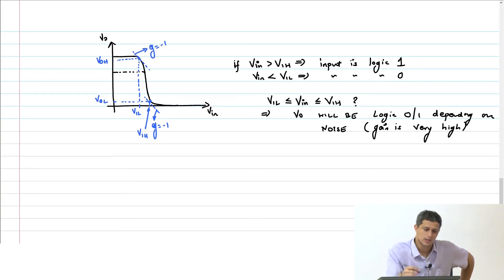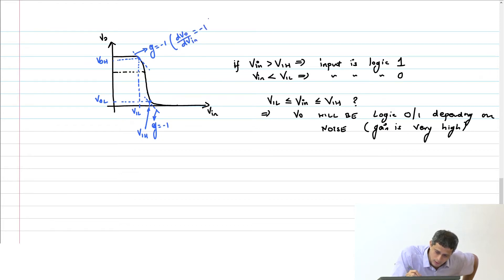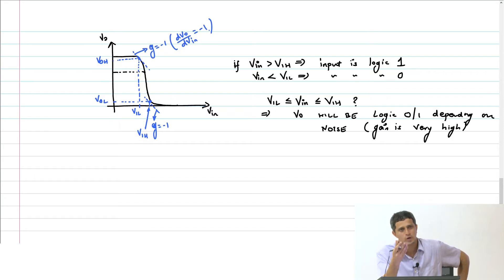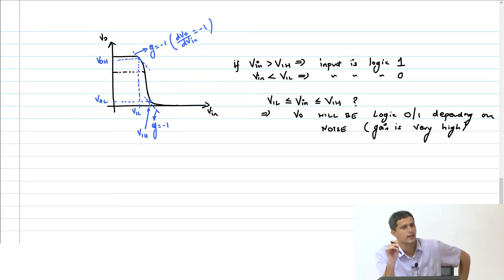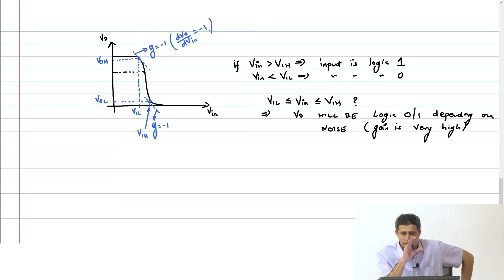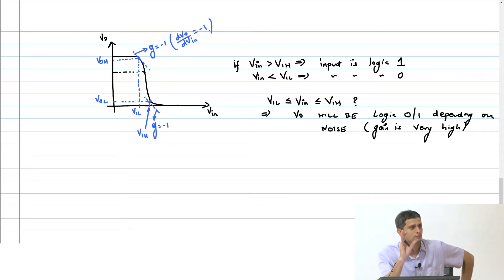We are finding the point at which the gain is minus 1, that is dV_out/dV_in equal to minus 1. The issue is that this is a quadratic equation, so it becomes very cumbersome to derive. It is possible to do it with some approximations — I would recommend you go back and try it once. It is very much possible, but you have to do it very carefully. Instead, there is another way where we can with some approximation obtain this expression pretty easily.